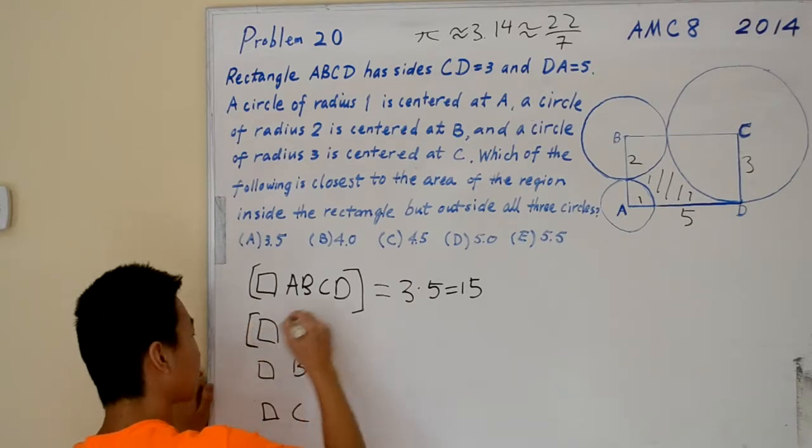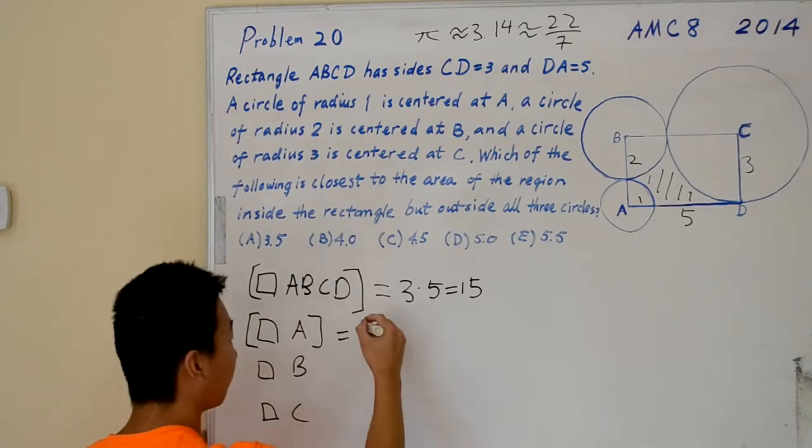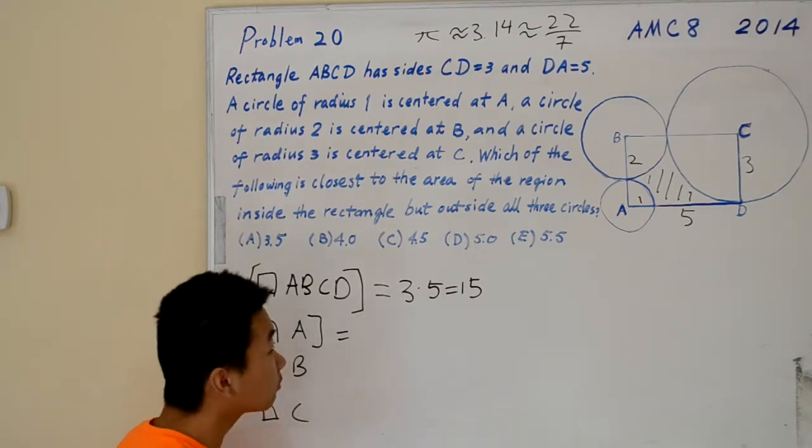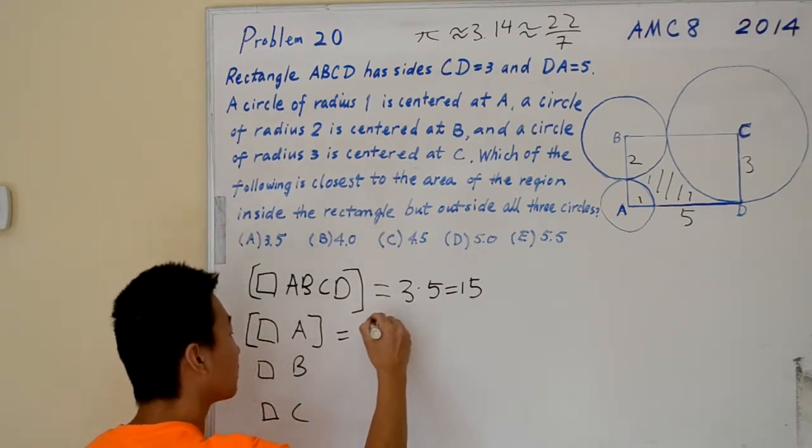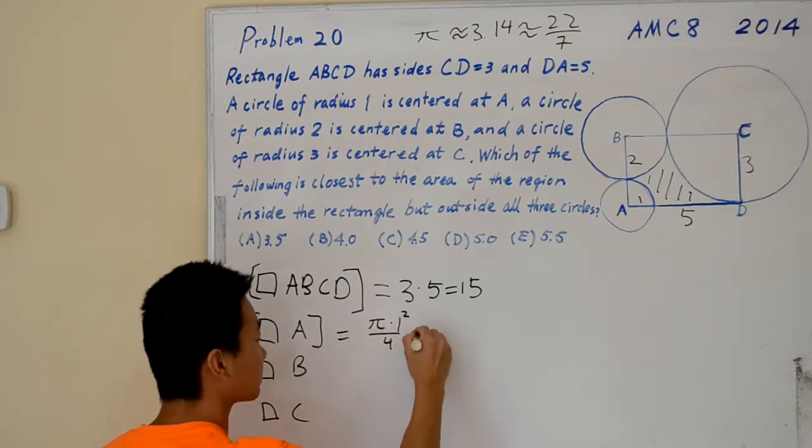Area of quarter circle A: we'll use the formula pi R squared. Since it's a quarter circle, we're dividing by 4. So pi times 1 squared over 4, which is pi over 4.